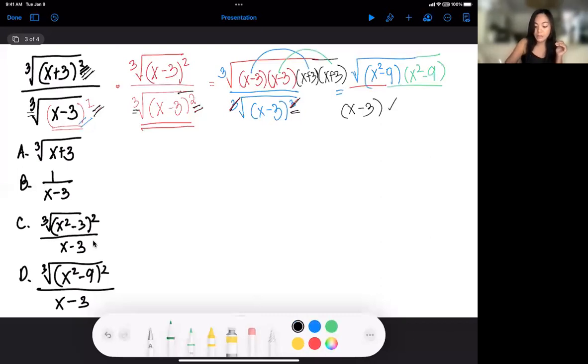That means my answer will look like this. A cube root of x squared minus 9, two of that, one and another one, so I have 2, divided by x minus 3. And the answer is letter.